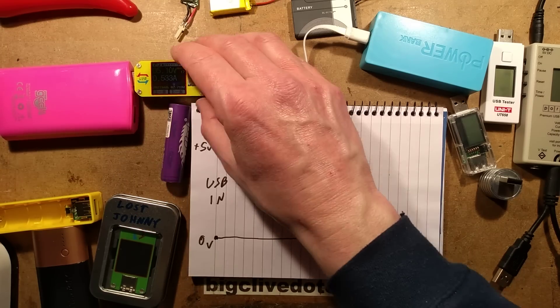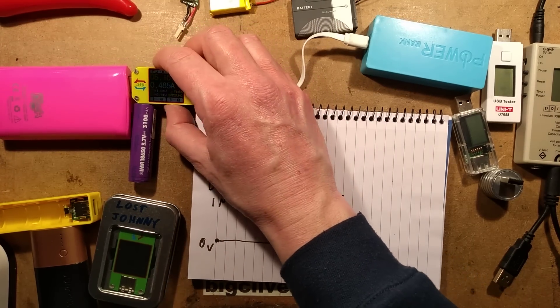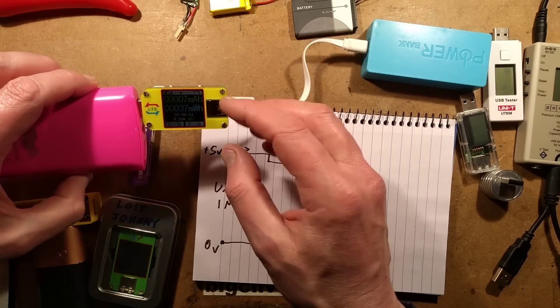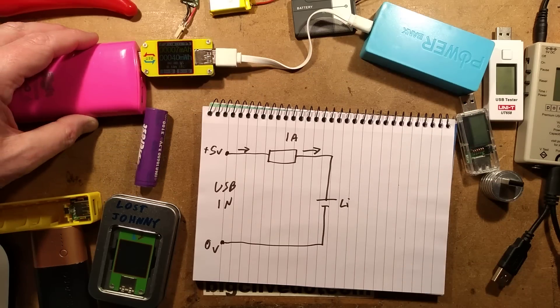It's showing 530 milliamps at the moment. It also keeps a running tally of the capacity. At the moment it's showing it's put 7 milliamp hour in.